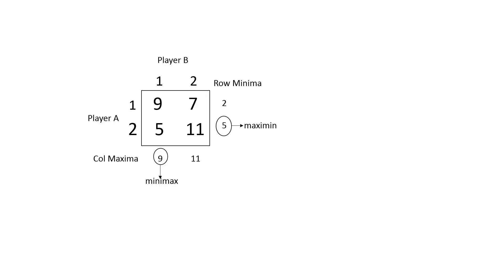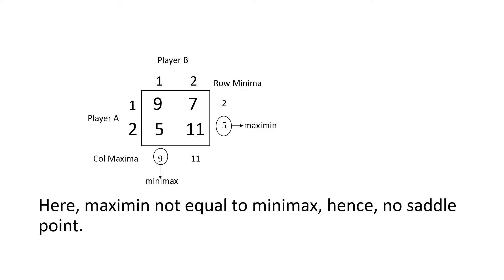Then find the maximin of the row and minimax of the column — that is, the maximum value from the minimum values for rows, and the minimum value from the maximum values of the columns. You get maximin value as 5 and minimax value as 9. Here, maximin is not equal to minimax, so there is no saddle point. In pure strategy, the maximum value was equal to the minimax value and it had a saddle point, but here it does not.